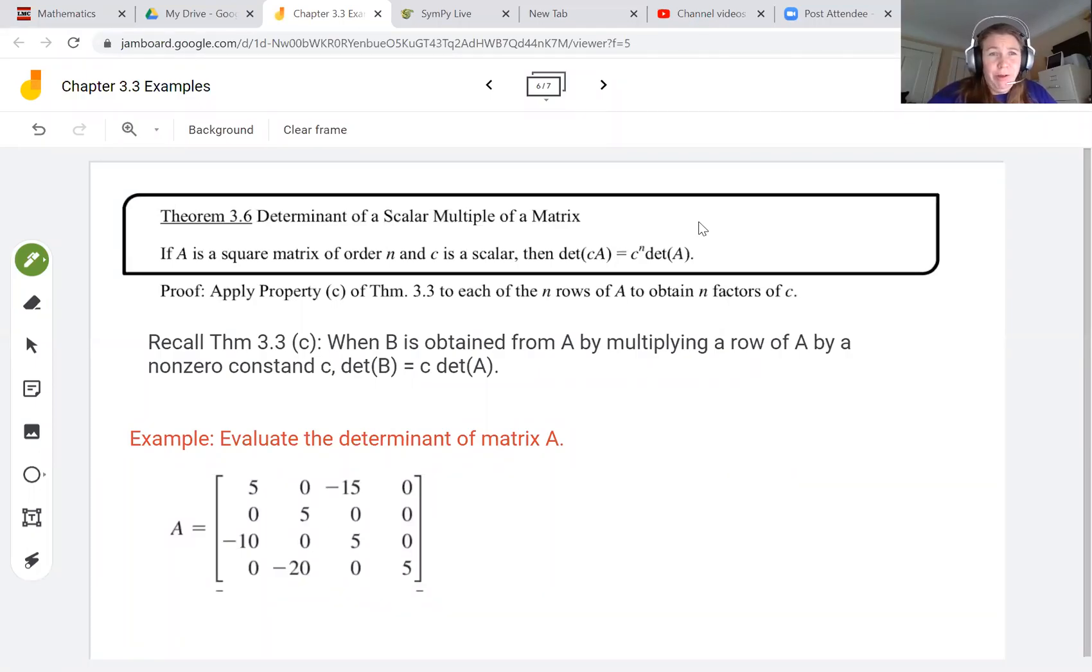In this video for chapter 3.3, we take a look at finding the determinant of a scalar multiple of a matrix. We are going to look at theorem 3.6, which says if A is a square matrix of order n and C is a scalar, then the determinant of C times A equals C to the nth power times the determinant of A.